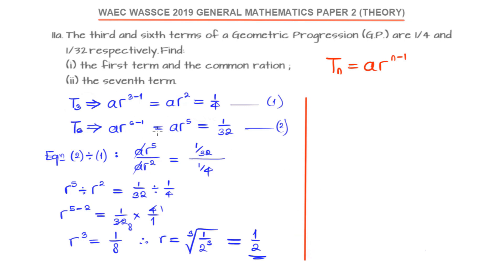We can take any of the two equations that we got initially and substitute for the value of R so we can get the first term. If we use equation 1, AR^2 equals 1/4. So instead of R, we have 1/2 raised to power 2 equals 1/4. Now 1/2 raised to power 2 is 1/4, and that means those 1/4s will cut out and A will be 1. So the first term is 1.